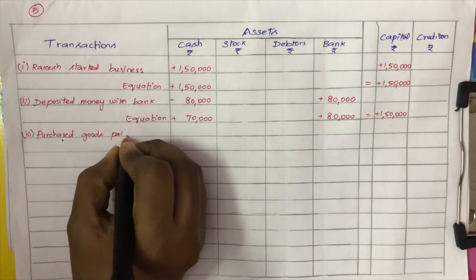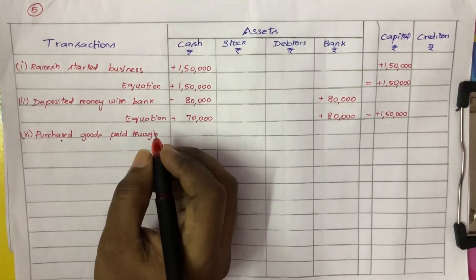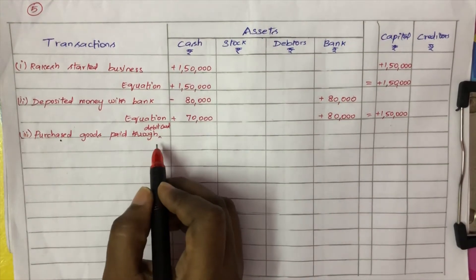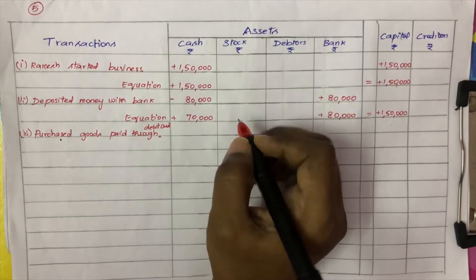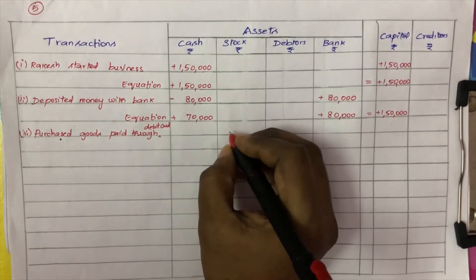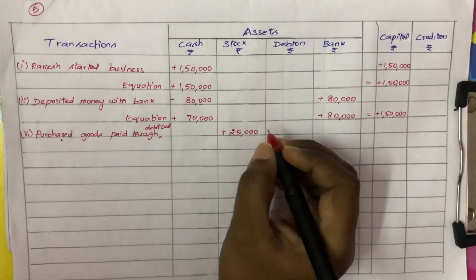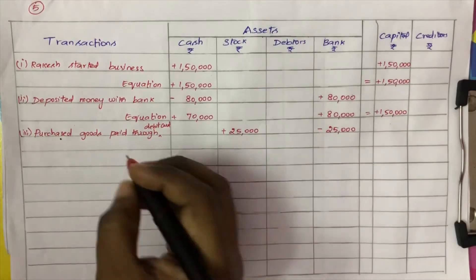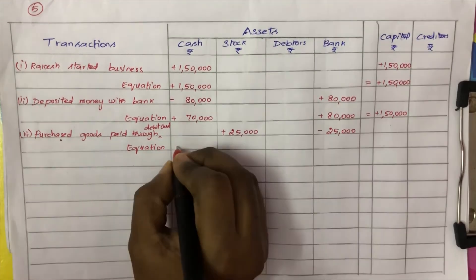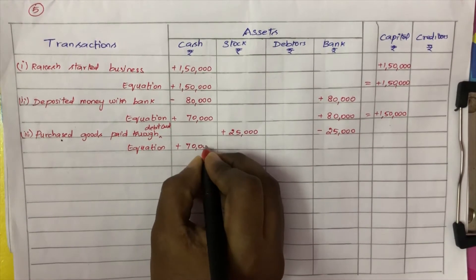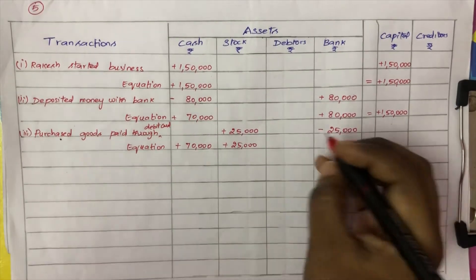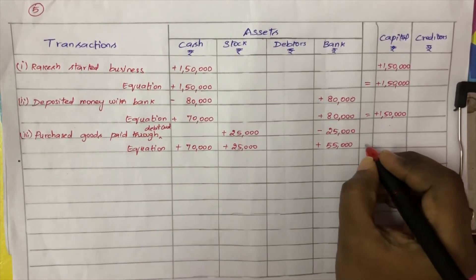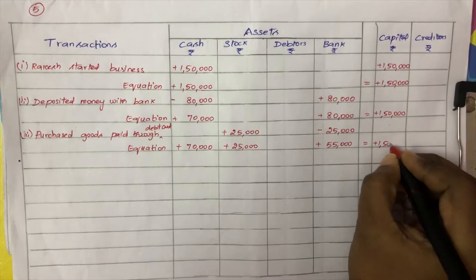Third transaction: purchased goods paid through debit card. The debit card is linked to the bank account. Goods (stock) increase by plus Rs. 25,000 and bank decreases by Rs. 25,000 minus. Now in the equation: cash is Rs. 70,000, stock is Rs. 25,000, bank is Rs. 55,000, equal to Rs. 1,50,000.